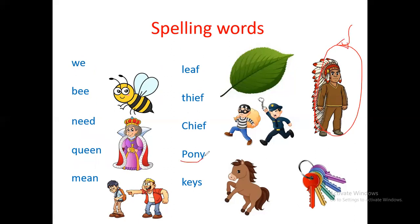Pony - the pony is a small horse. Keys - I found my keys, or I've lost my keys. So let's reread the words: we, bee, need, queen, mean, leaf, thief, chief, pony, keys.